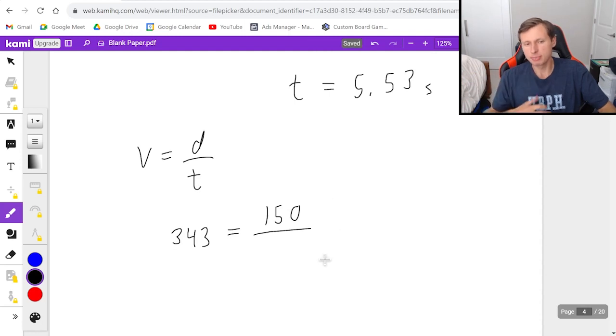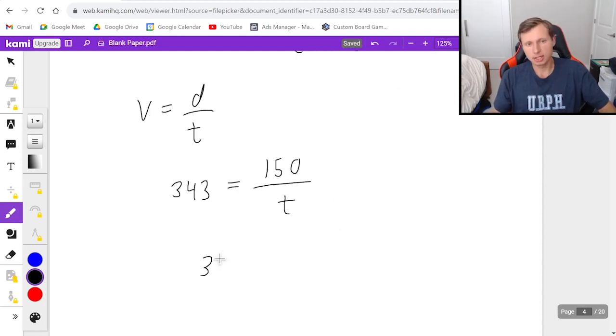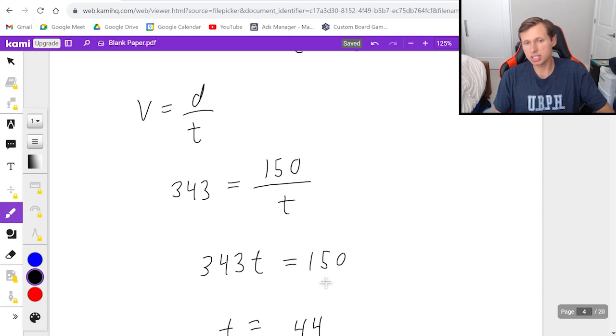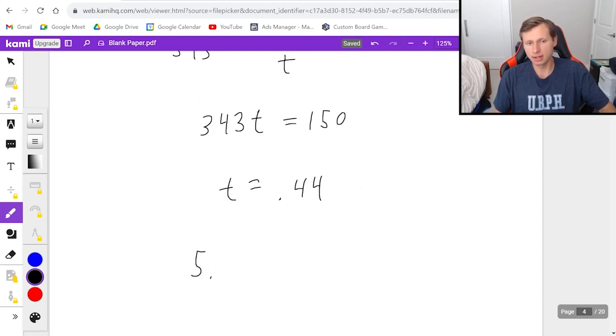Doesn't matter if it's positive or negative. I mean, it kind of does matter. Let's make it positive because I want a positive time as my answer. And then I'm going to say multiply both sides by t, we'll get this and then just divide by 343 is going to be 0.44 seconds.